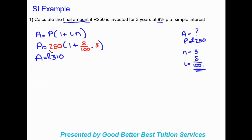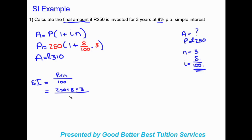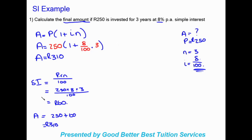Let's verify using the other equation: SI = PRN ÷ 100 = 250 × 8 × 3 ÷ 100 = 60 rand. That's only the amount of interest earned, so you then say A = 250 + 60 = 310 rand. You still get the same answer, but there's an extra step. That's why I'd prefer you use the future value formula A = P(1 + I × N) if they ask for the final amount.